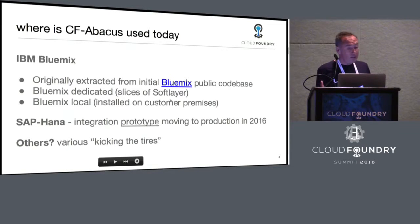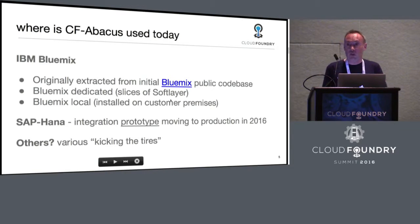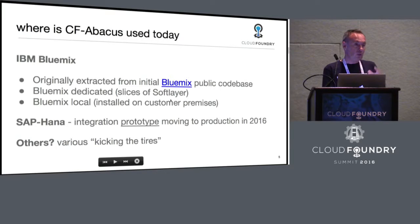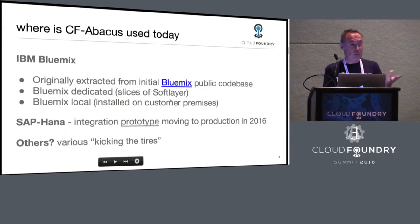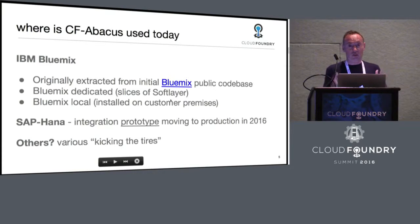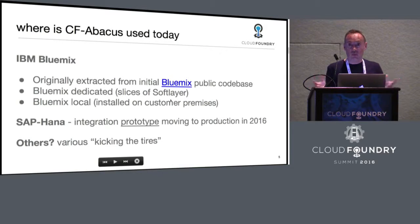Where is Abacus used today? The code initially came from Bluemix — we developed the metering and rating system for Bluemix internally at IBM. Then we took a cut of that codebase and open-sourced it. We wanted to contribute back to the Cloud Foundry Foundation and make the APIs open to help the ecosystem of service providers get on board a common metering platform.